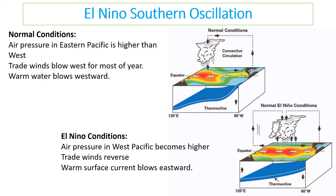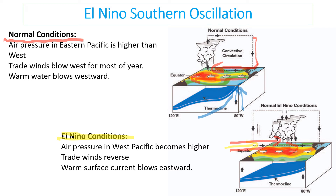El Niño is another key oscillation to focus on. In normal years, higher pressure in the eastern Pacific causes winds to blow westward, moving warm water west. This causes cold water to upwell from depth, bringing nutrients up and maintaining high nutrient levels in the sea. In an El Niño year, the wind changes direction, driving warm water toward the coastline of South America, so the warm water arrives there and moves downward, stopping the upwelling.